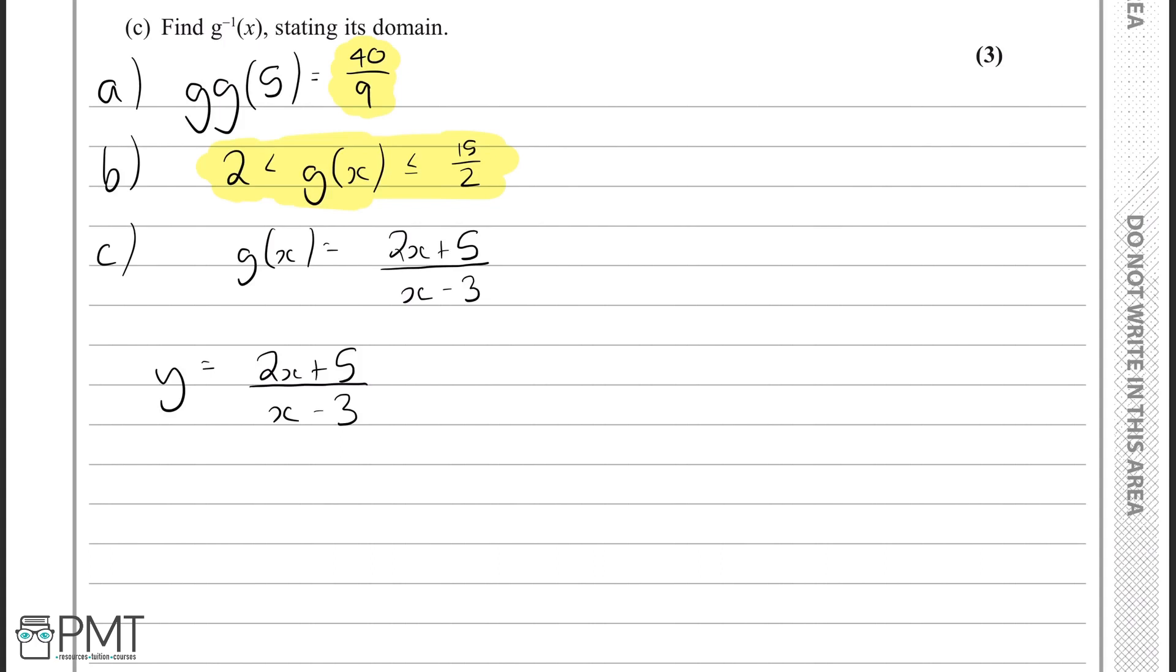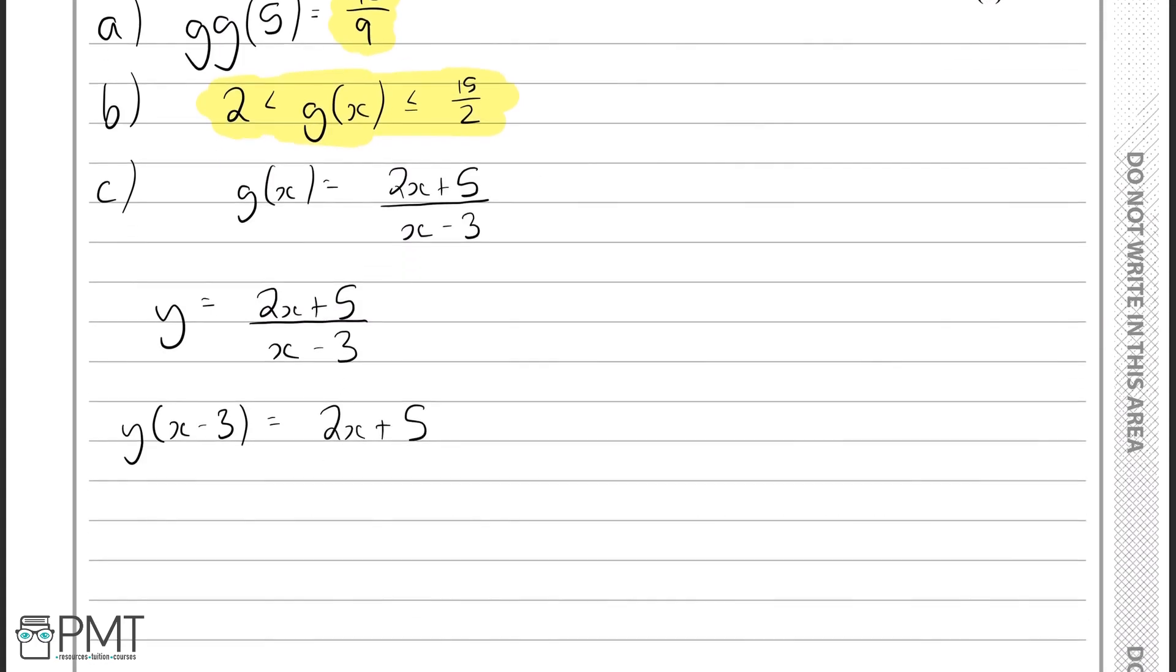So now, let's times both sides by x minus 3 to simplify this. So you have y times x minus 3 equals 2x plus 5. Then let's expand the bracket on the left-hand side. So we have xy minus 3y equals 2x plus 5.